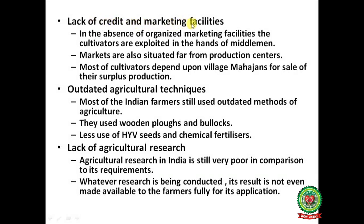Lack of credit and marketing facilities: in the absence of organized marketing facilities, cultivators are exploited by middlemen, and markets are also situated far from production centers. Most cultivators depend on village moneylenders for sale of their surplus production. Outdated agricultural techniques: most Indian farmers still use outdated methods like wooden plows and bullocks with less use of HYV seeds and chemical fertilizers. Lack of agriculture research: agriculture research in India is still very poor, and whatever research is conducted, its results are not made available to farmers.